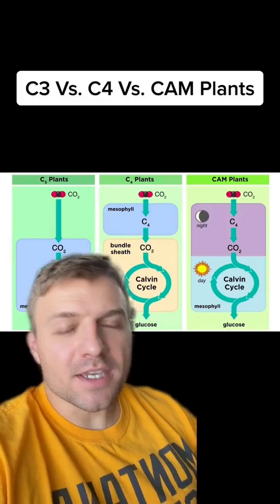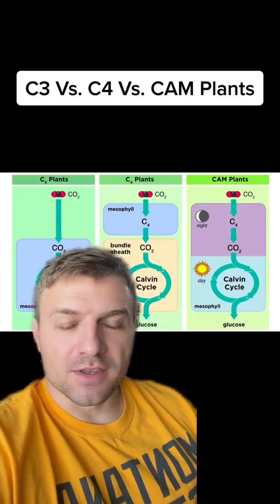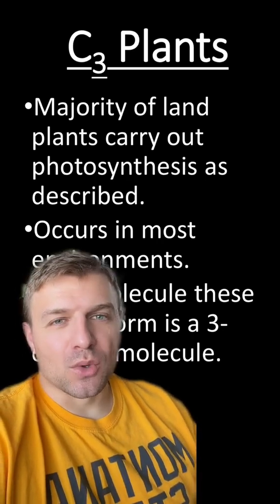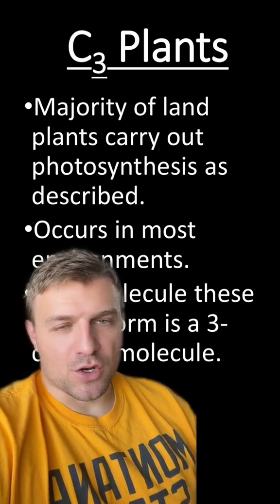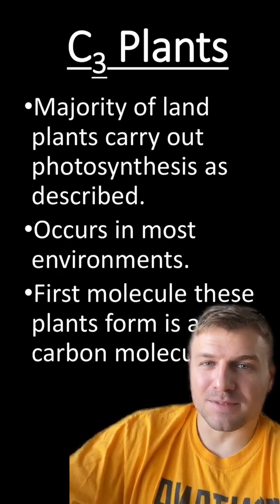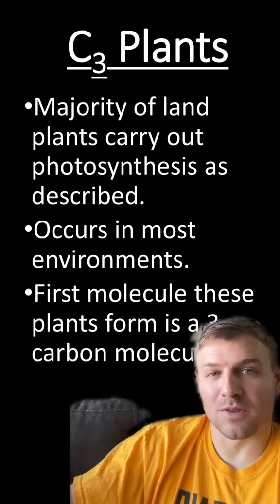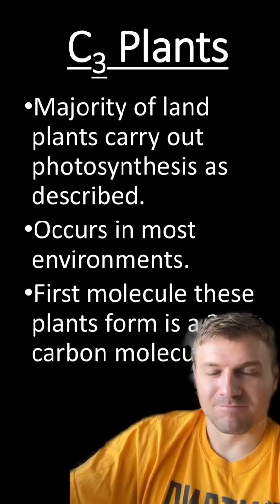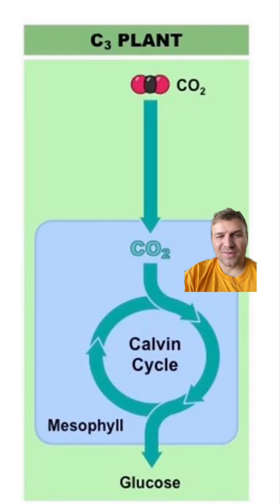Let's go over the C3, C4, and CAM plants within photosynthesis. C3 plants describe a majority of land plants that carry out photosynthesis. They call these plants C3 plants because the first molecule created within photosynthesis is a three-carbon molecule. These C3 plants occur in most environments.